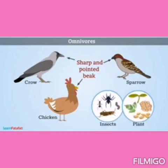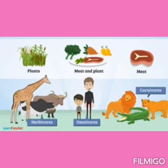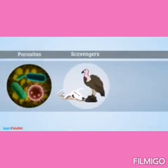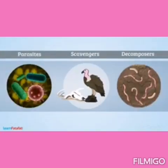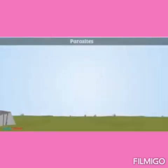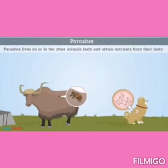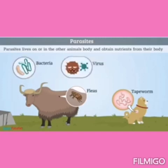Besides these three main categories, there are other animals such as parasites, scavengers, and decomposers. Parasites are animals which live on or in another animal's body and obtain nutrients from it. Examples include tapeworms, fleas, bacteria, viruses, and protozoa such as plasmodium.